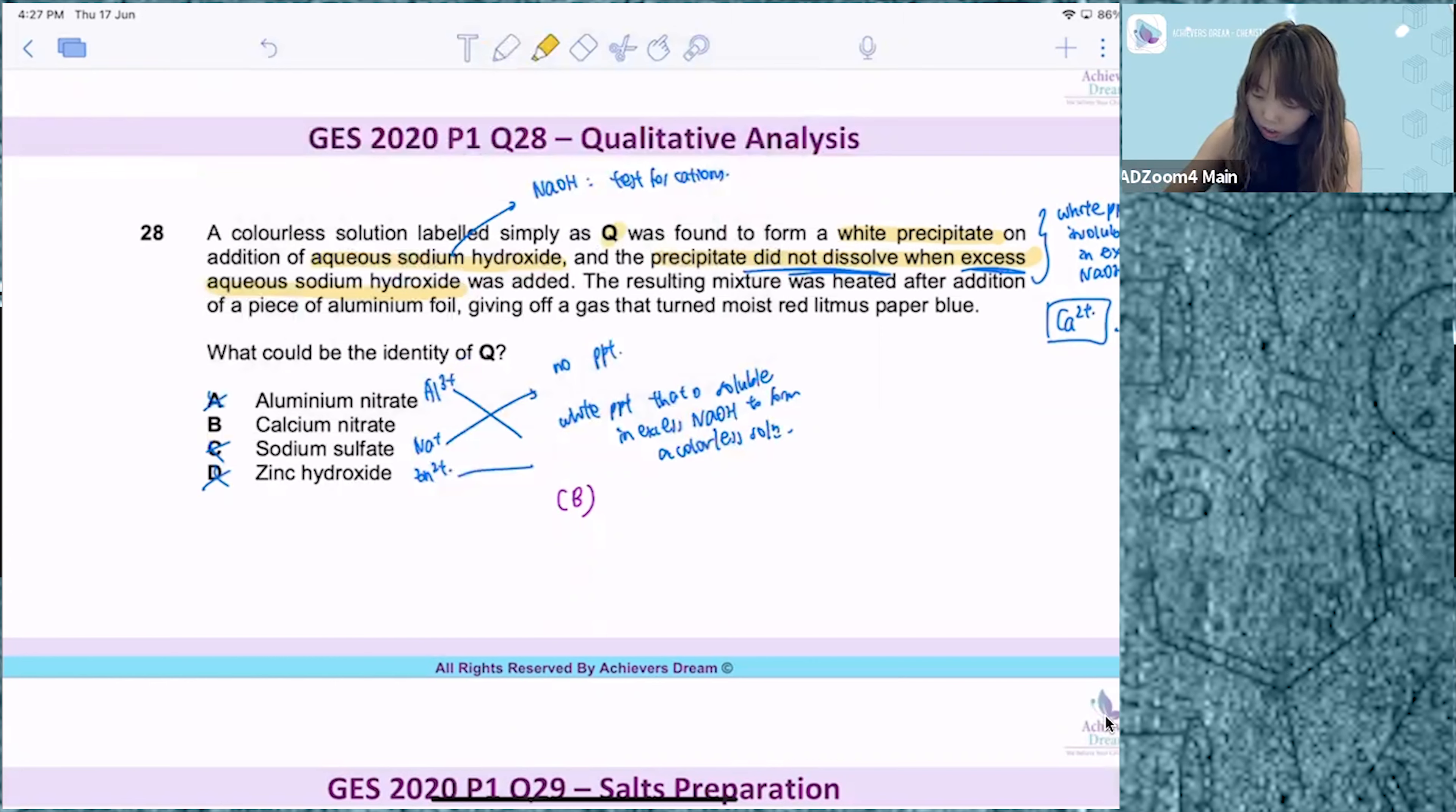Okay, which is the resulting mixture was heated after addition of a piece of aluminium foil, giving off a gas that turned moist red litmus paper blue.